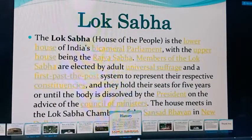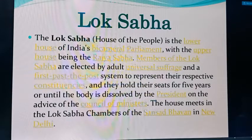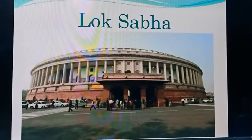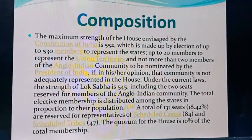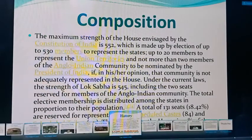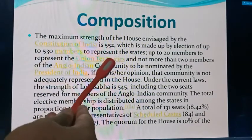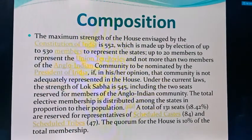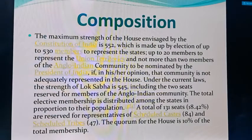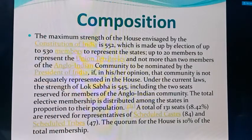Via Universal Adult Franchise — as you must have learned in earlier classes — those who are adults vote and choose their representatives because they have the maturity to differentiate between right and wrong. The composition has a maximum limit of 552, where 530 are coming from states and 20 are coming from Union Territories, and not more than 2 can be chosen by the President of India.